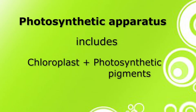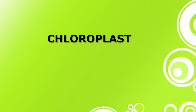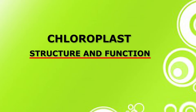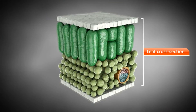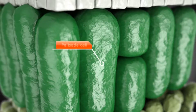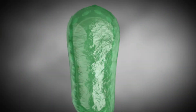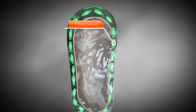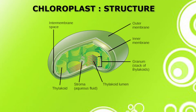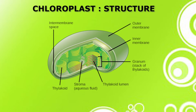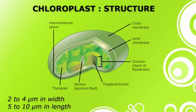The photosynthetic apparatus includes chloroplasts and photosynthetic pigments. Chloroplasts serve as the main site for photosynthesis to take place. Chloroplasts are located in the mesophyll cells of leaves. In higher plants, these microscopic cell organelles are generally lens-shaped and measure approximately 2 to 4 micrometers in width and 5 to 10 micrometers in length.